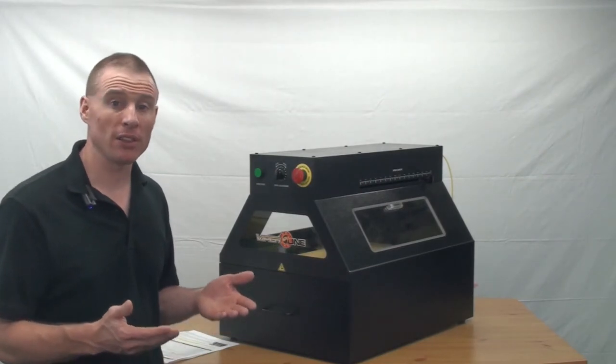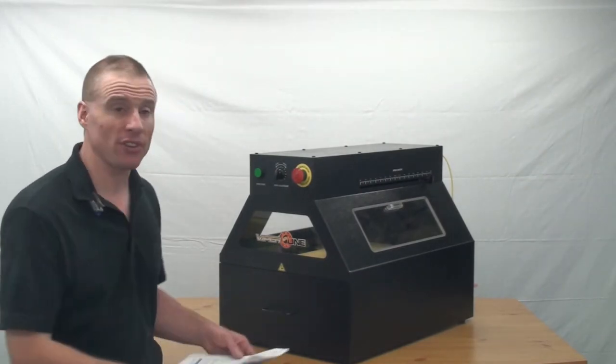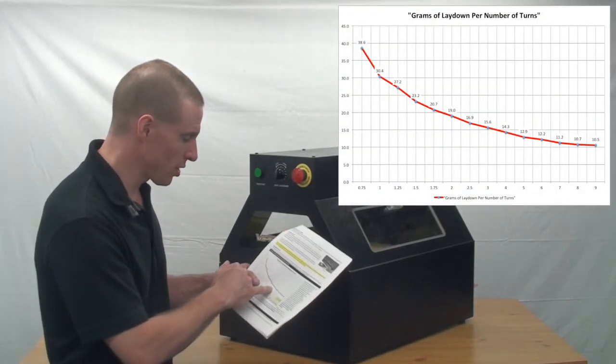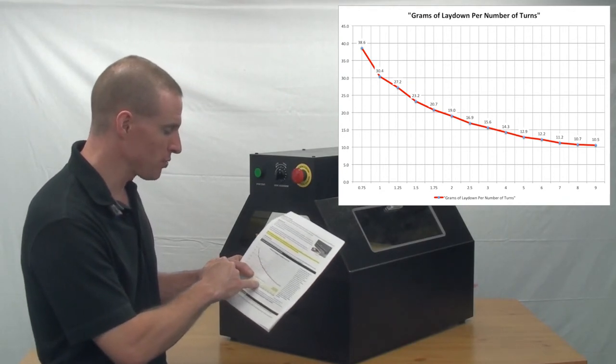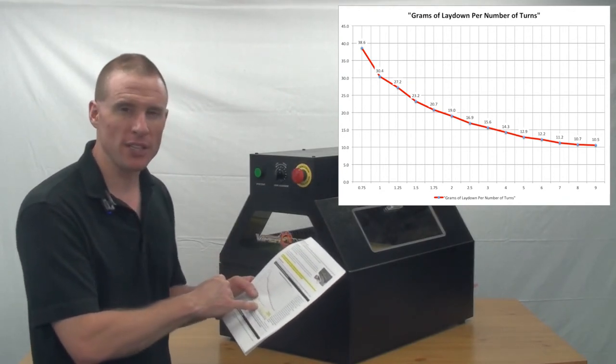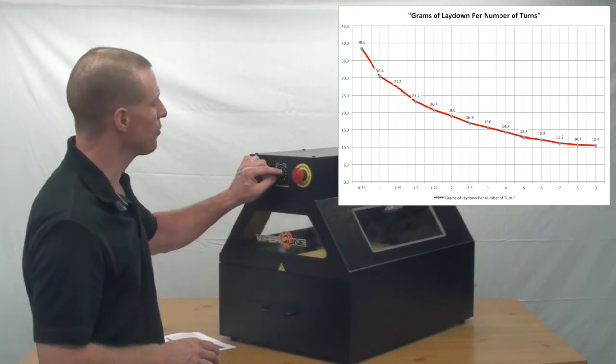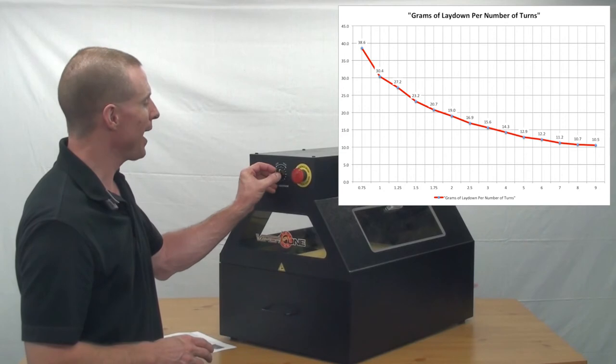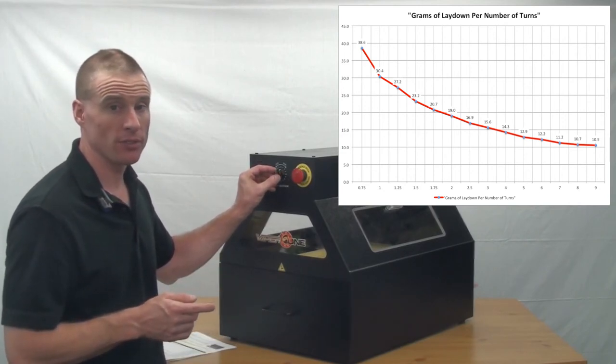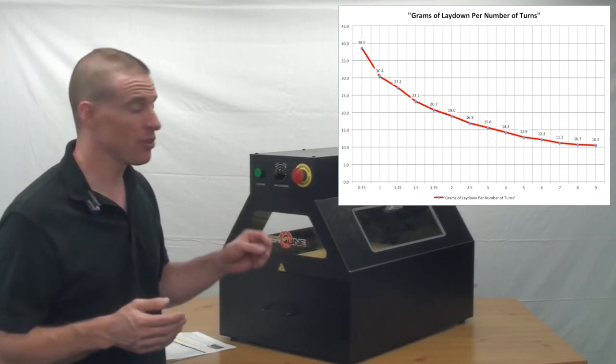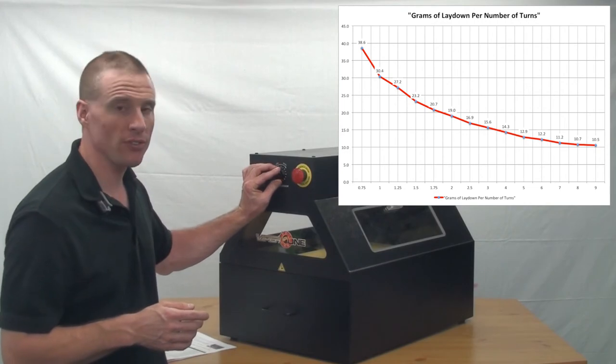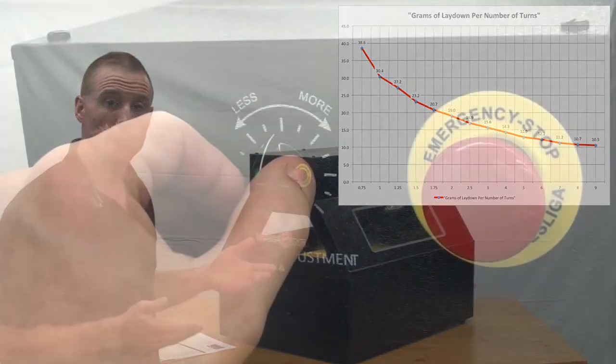So if we wanted to lay down less pre-treatment, let's say about 16 grams, I can look at my chart and see that three full rotations would be about 15 to 16 grams of fluid. Now if I forgot where this is set at, all I have to do is rotate it back counterclockwise or clockwise to the home position when I meet just a little bit of resistance, and then I can open it up three full turns.